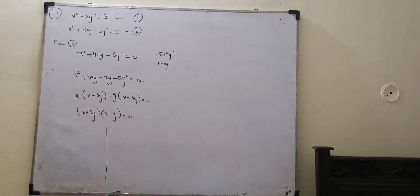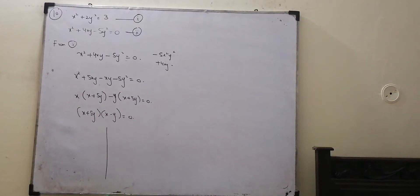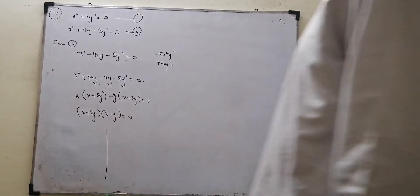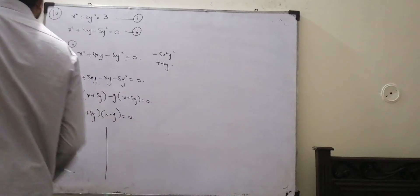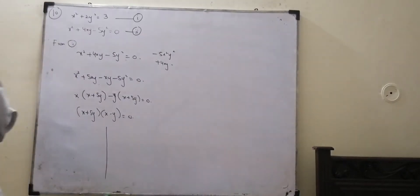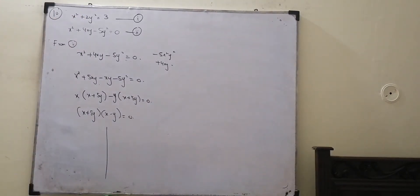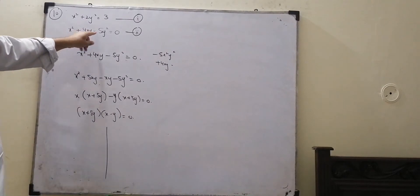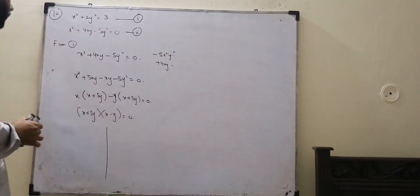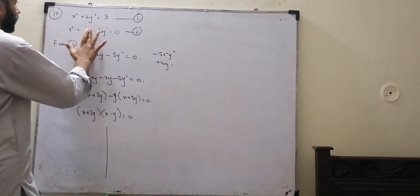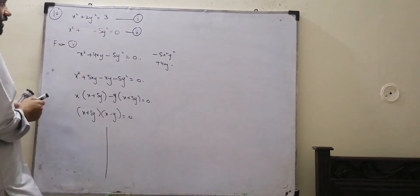Okay dear students, if we take it further, we will see that question number 10 is going to be attempted this way. We have two equations given: x squared plus two y squared is equal to 3, and x squared plus four x y minus y squared is equal to zero. If you look at this term, it will be related to the last three questions.